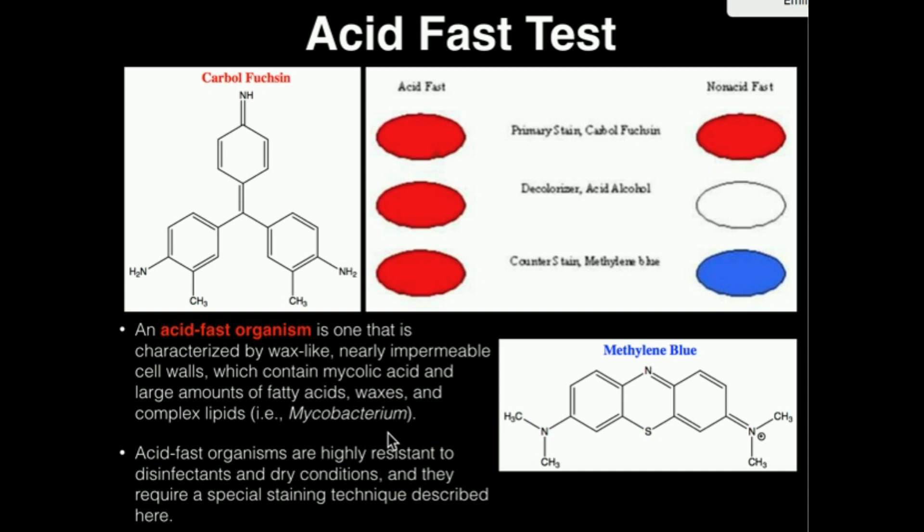So how exactly does the acid-fast test work? Well, the theory behind it is very similar to a gram stain. Except the primary stain that we're going to use is called carbolfuchsin. Carbolfuchsin, which is shown right here, is red. So initially what we're going to do to every organism is we're going to stain them with carbolfuchsin.